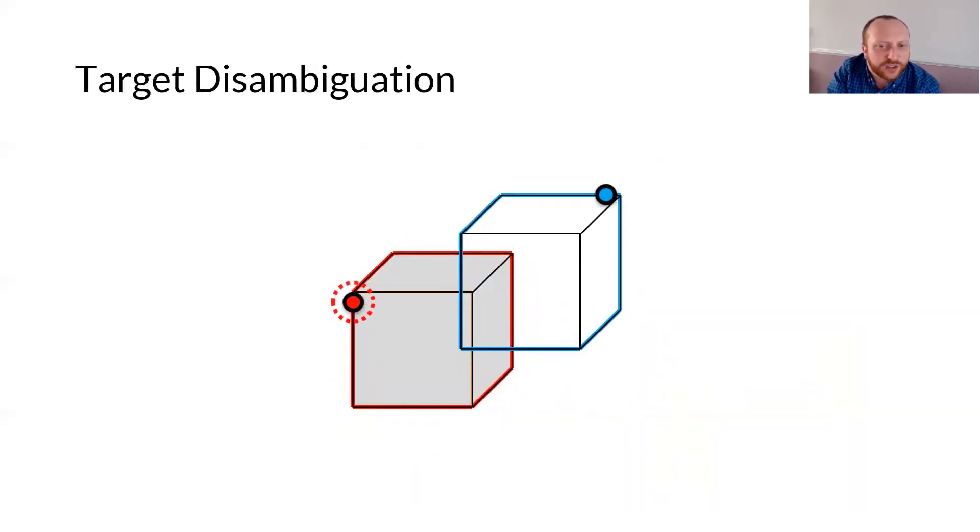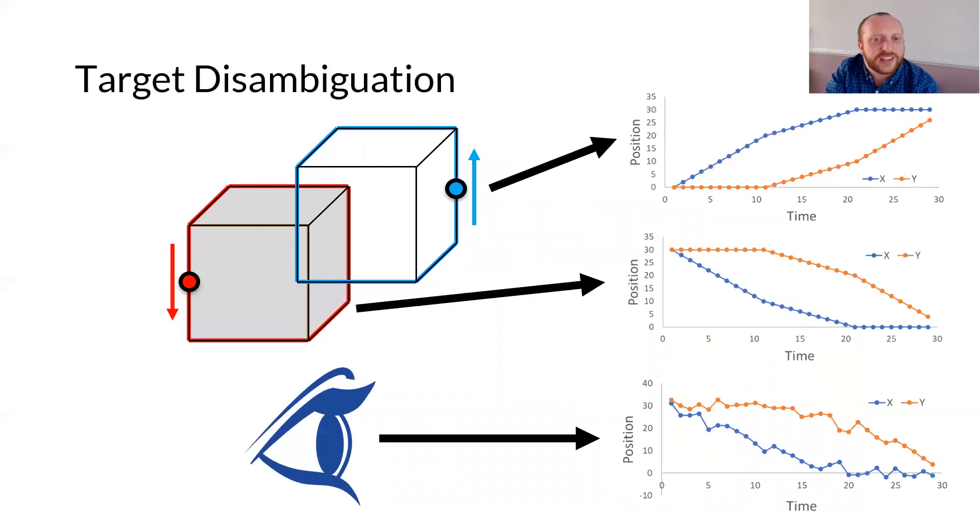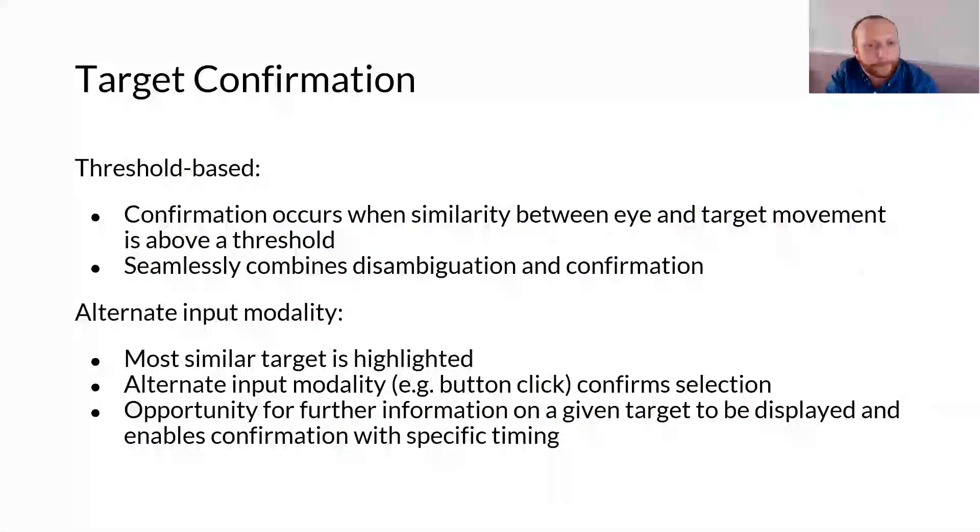Target disambiguation occurs when the user follows the relevant target using their gaze, resulting in a smooth pursuit eye movement. The system takes as input the user's eye positions and all of the candidate target positions as spatiotemporal trajectories. We then calculate a similarity metric for each target to determine which, if any, the user is following. Traditionally, disambiguation and confirmation occur in a seamless fashion for smooth pursuit interactions, when the similarity value of one of the targets surpasses a threshold.